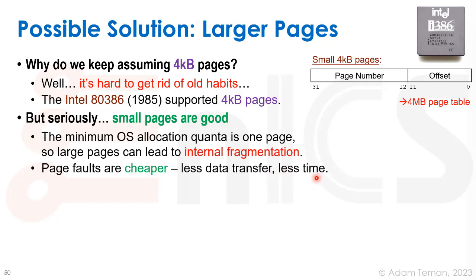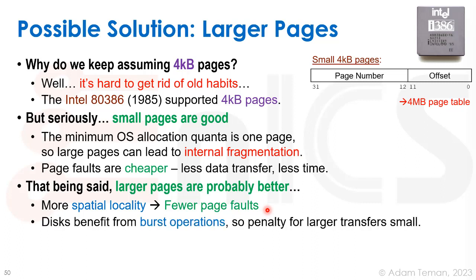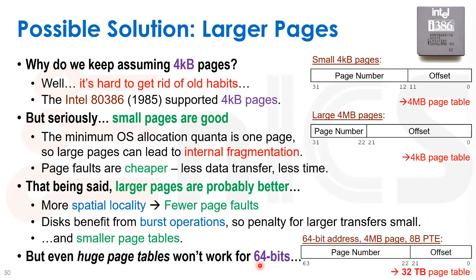That said, larger pages are probably better overall. A larger page means more spatial locality and fewer page faults, which matters more than less transfer time per fault. Disks benefit from burst operations, so the penalty for larger transfers is small — the real cost is seeking the disk head, so transferring more data at once is efficient. Larger pages also give us smaller page tables. For example, four-megabyte pages yield only four-kilobyte page tables. But with 64-bit addresses, even four-megabyte pages with eight-byte entries results in 32 terabytes just for a page table — that's not feasible.